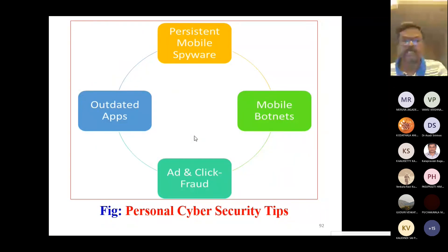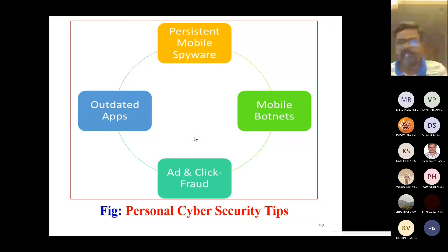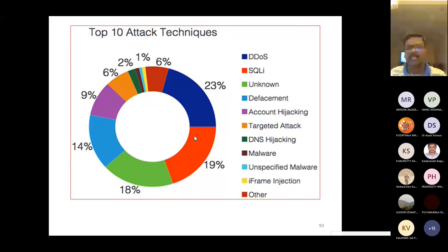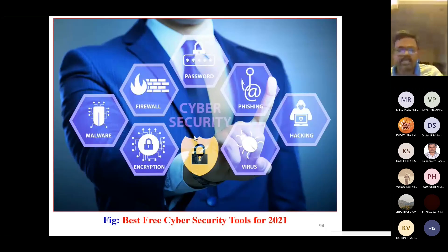Personal cyber security threats include persistent mobile spyware, mobile botnets, ad and click fraud, and outdated apps. Looking at the top 10 attack techniques: DDoS accounts for 23%, SQLi 19%, unknown 18%, defacement 14%, targeted attacks 6%, DNS hijacking, malware, and so on.